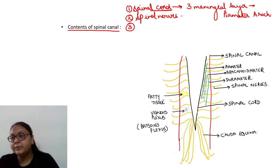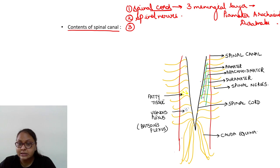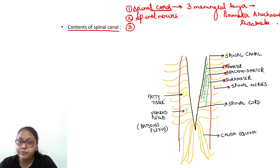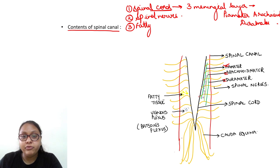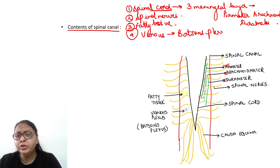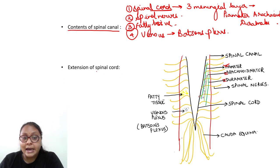From inside to outside the meningeal layers are pia mater, arachnoid, and dura mater. From here emerge the spinal nerves. The spinal canal also contains fatty tissue and venous plexus — this plexus is known as Batson's plexus.